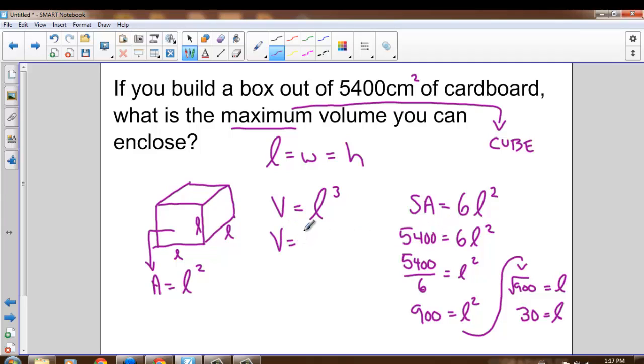So a length of 30 gives us our surface area of 5,400. And now I can take that length of 30 and plug it into my volume equation for L, and find the cube of 30, and I get a volume of 27,000 centimeters cubed.